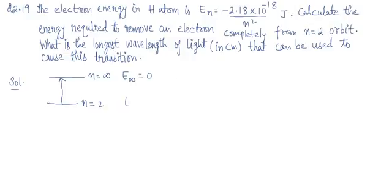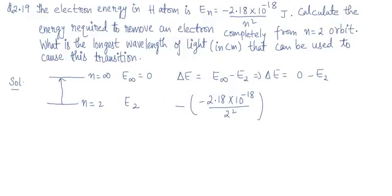And here energy at 2 is E_2. So delta E will be, the energy you have to supply, that will be E infinity minus E_2. That is, the energy you have to supply will be 0 minus E_2, which is minus E_2. And E_2 will be minus 2.18 into 10 to the power minus 18 divided by 2 square. So this is the delta E.